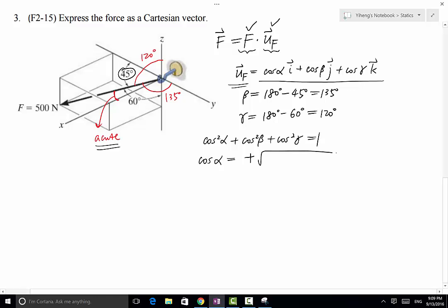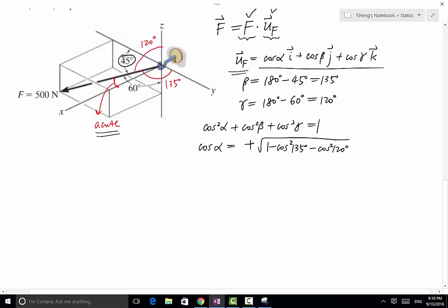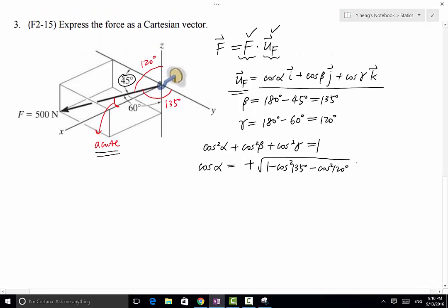In this case, positive square root of 1 minus cosine beta, which is 135 degrees squared, minus cosine 120 degrees squared. So from here we can do the calculation and realize that this is simply 0.5. Therefore my alpha equals inverse cosine or arc cosine 0.5, and that's 60 degrees.